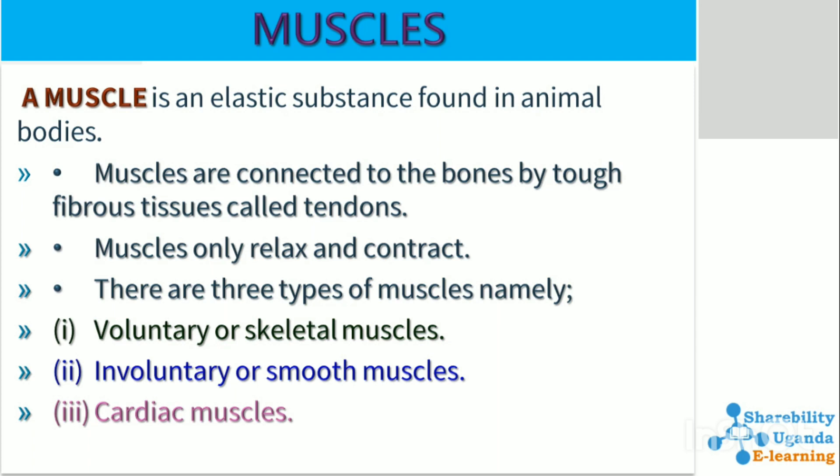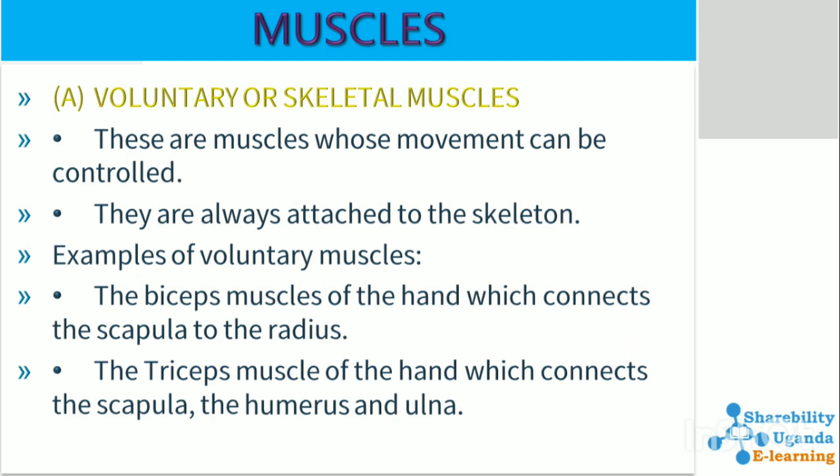There are majorly three types of muscles: voluntary or skeletal muscles, involuntary or smooth muscles, and cardiac muscles. Voluntary or skeletal muscles are those muscles whose movement can be controlled. They are always attached to the skeleton. Examples include the biceps muscles of the hand, which connects the scapula to the radius, and the triceps muscles.